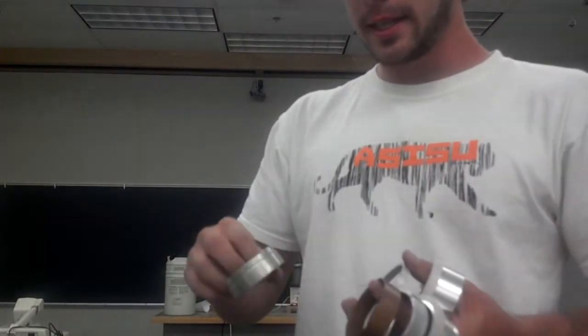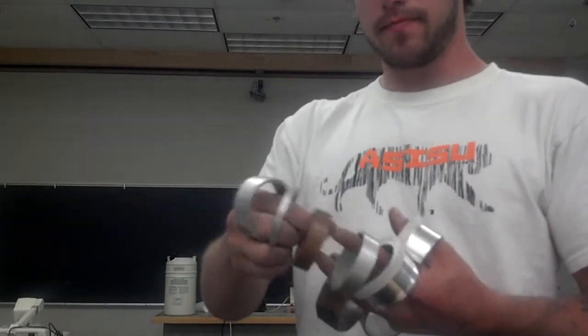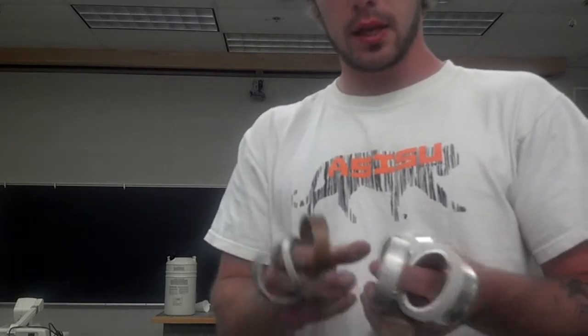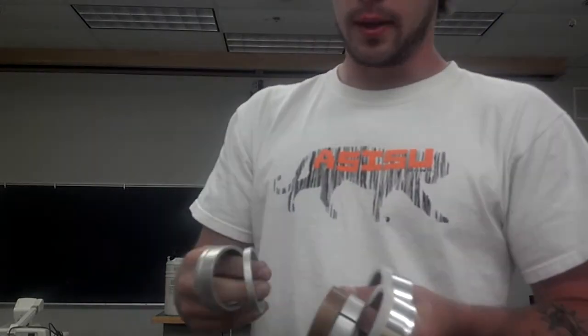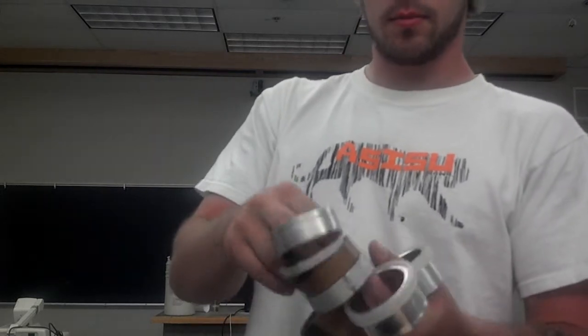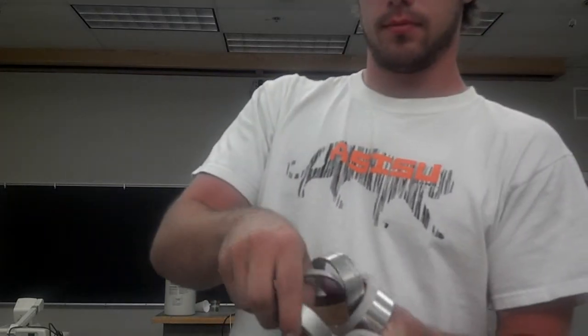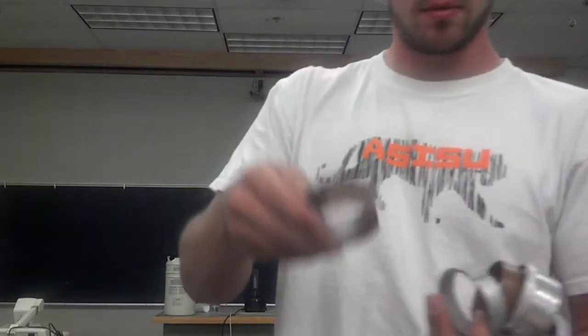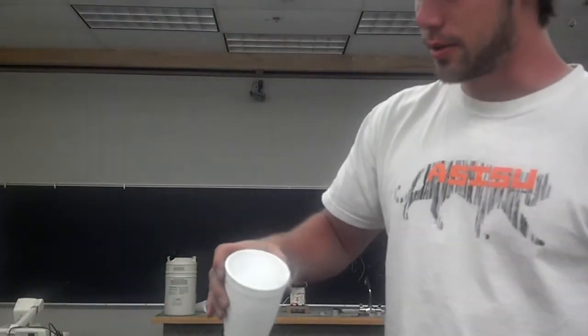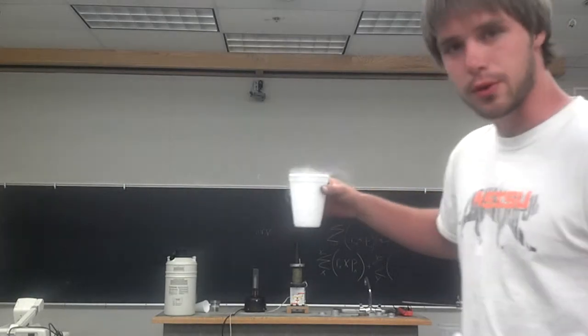We've got an assortment of rings here: aluminum and copper rings, some of them have slits in them, and some of them are bigger than others. This one in particular is very massive. We're gonna jump them with the ring jumper. We also have some liquid nitrogen to cool the rings down.